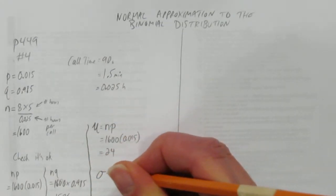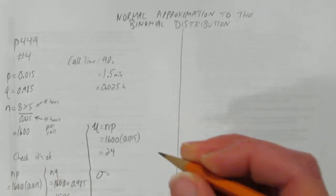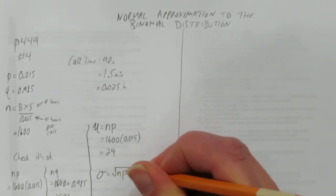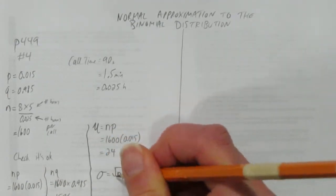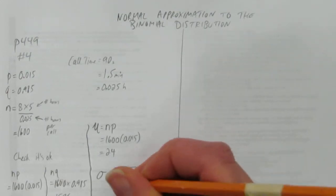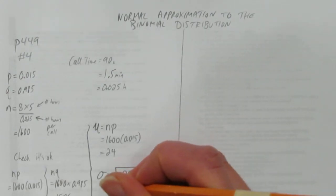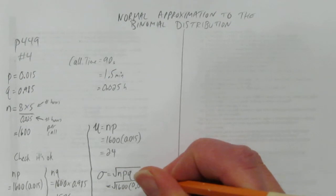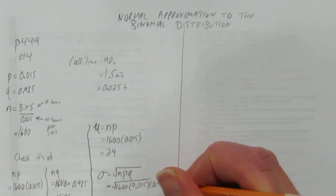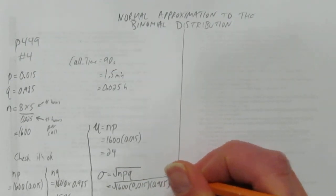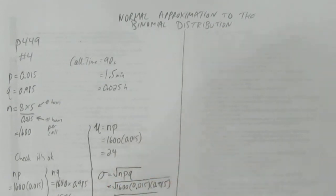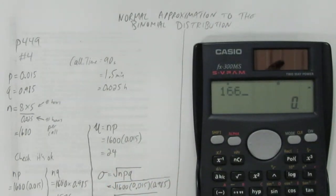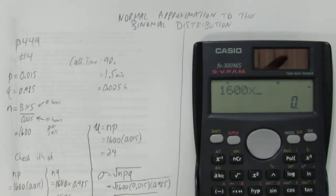What's sigma? What's the standard deviation? It's just going to be the square root of N times P times Q. And you'll have these formulae on a test. Don't forget the square root though, it's a common mistake. What's N, 1600 times P, 0.015 times Q, 0.985. I'm going to put the square root right away. Make sure you don't forget it.